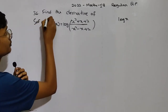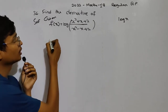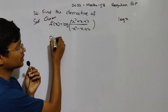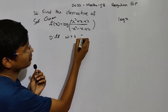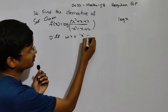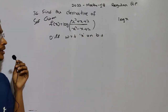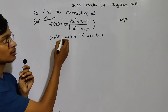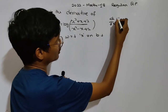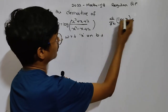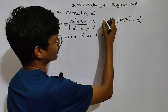Solution. We can differentiate it with respect to x on both sides. So, this is d by dx of log x. First, we can write log x.